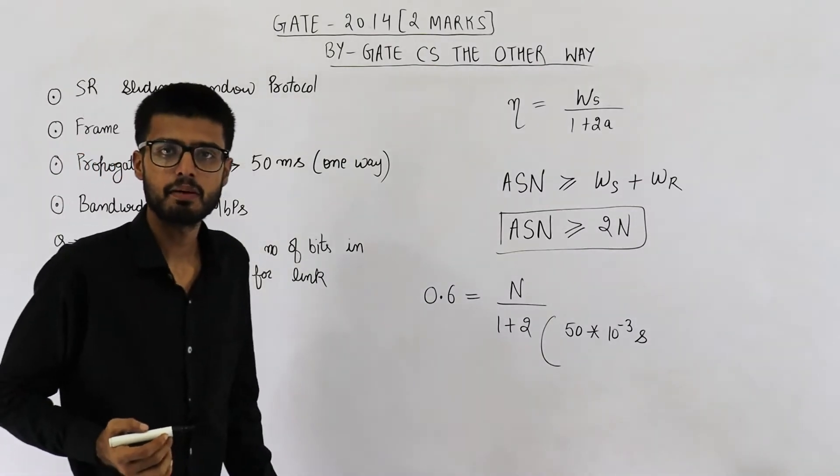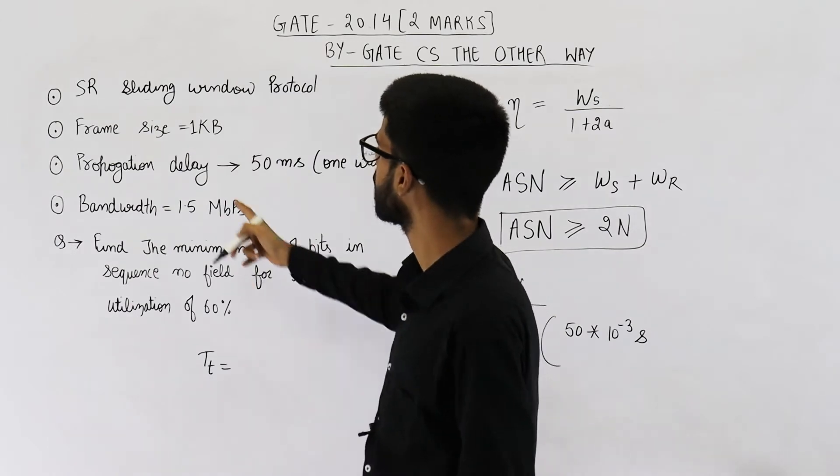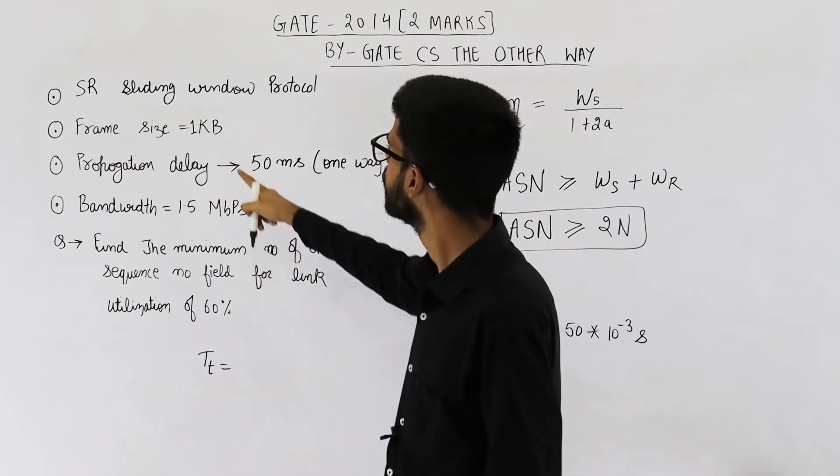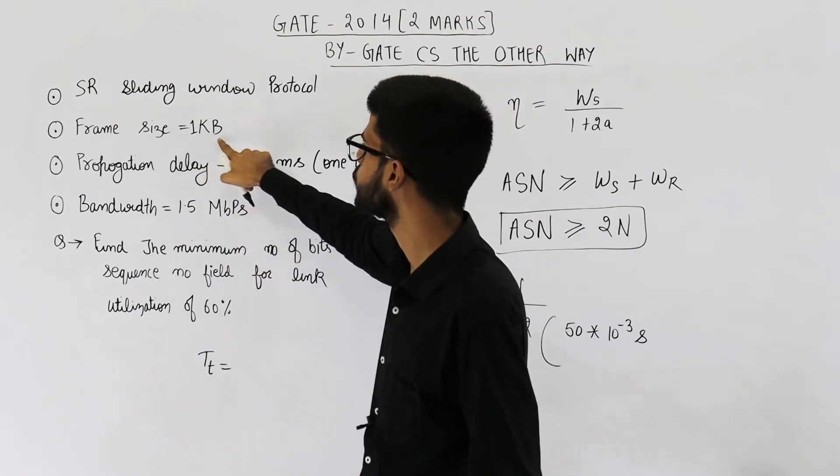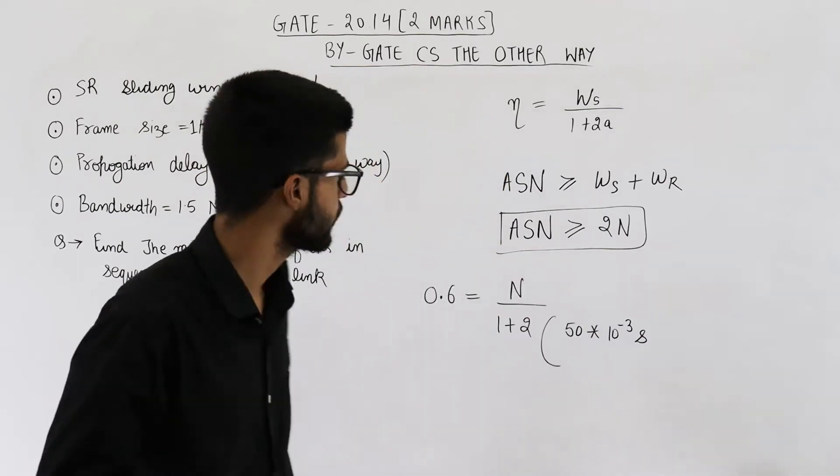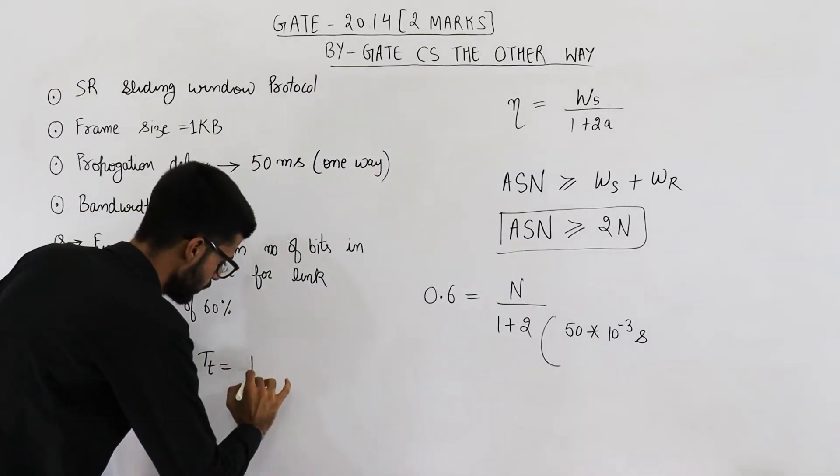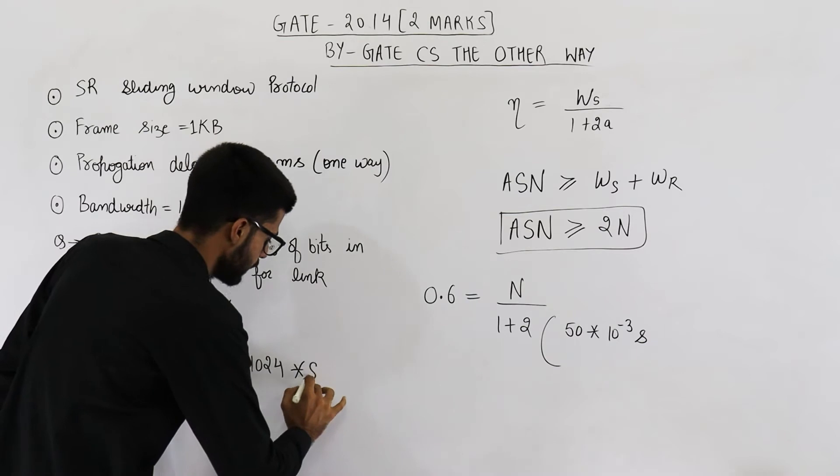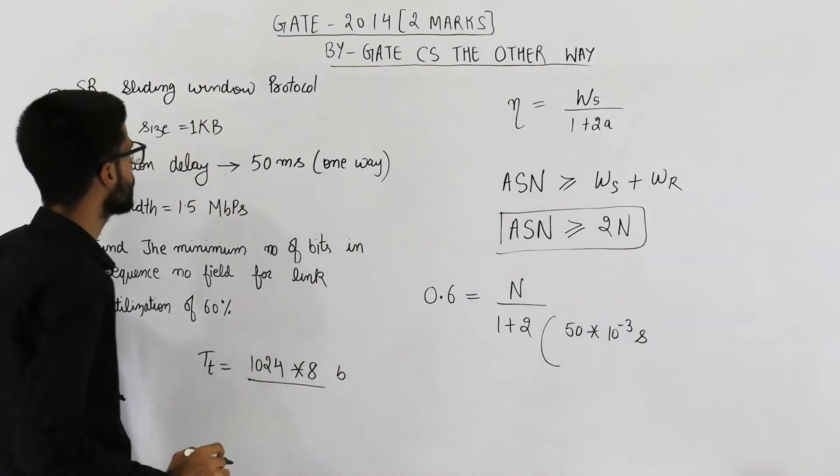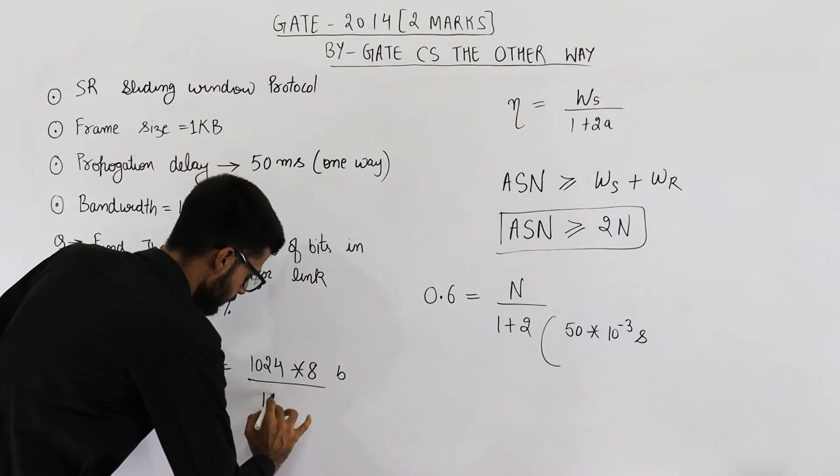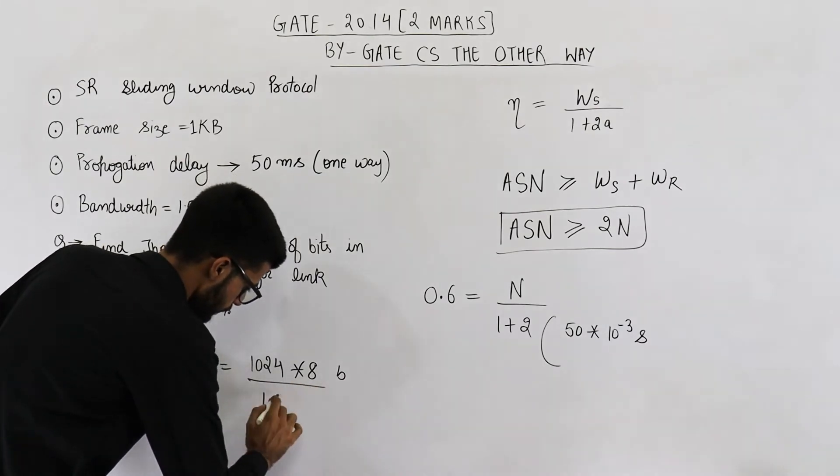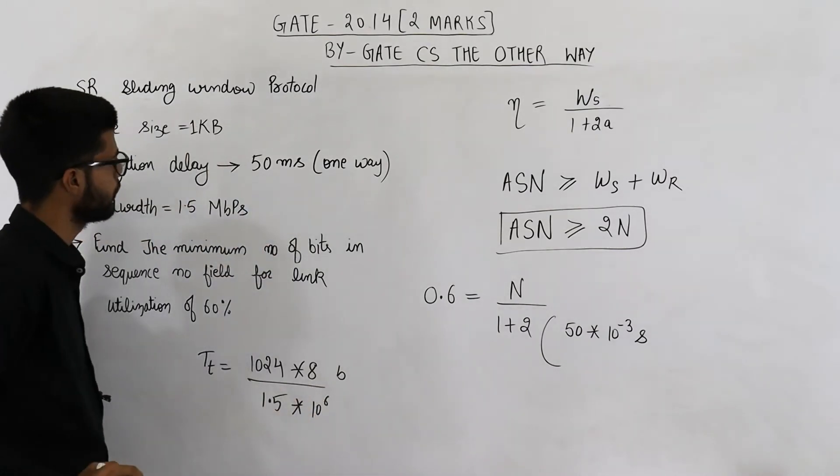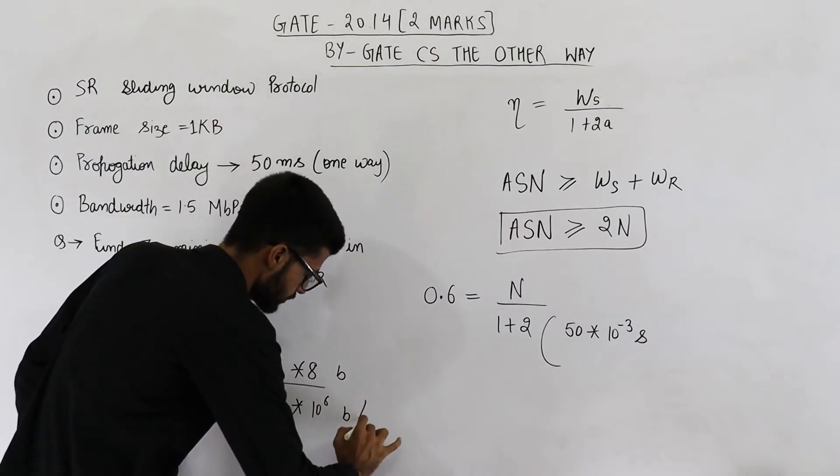tt will be length of the packet divided by the available bandwidth. So length of packet is 1 KB. Available bandwidth is 1.5 megabits per second. So this is in bytes, this is in bits. That means we need to convert this one into bits. Let's make the units equal. 1 KB means 1024 bytes. And let's convert it into bits by multiplying by 8. So these many bits divided by 1.5 mega. Mega means 10 raised to the power 6 bits per second.